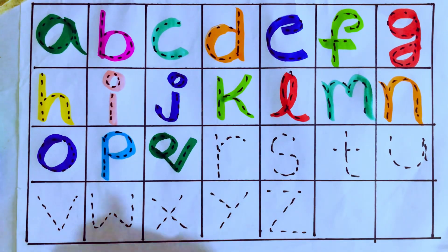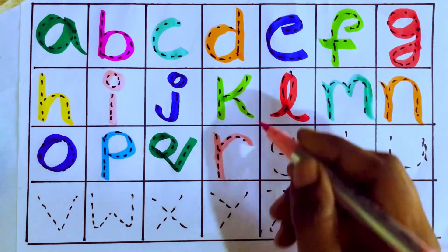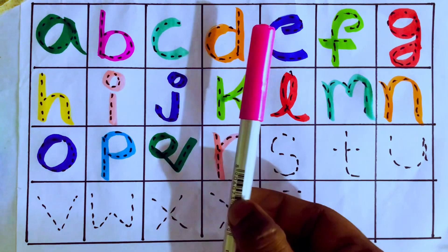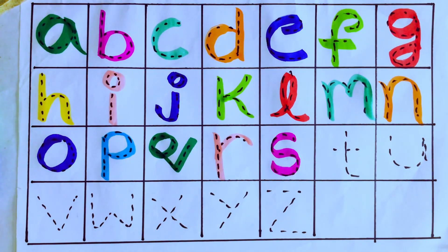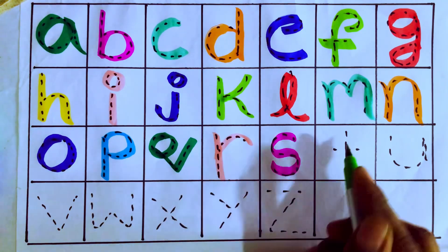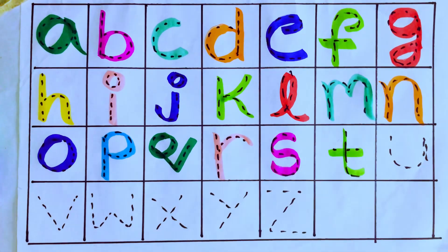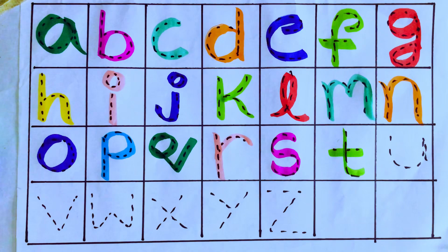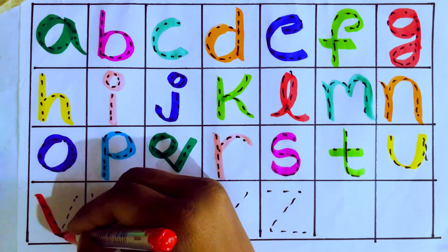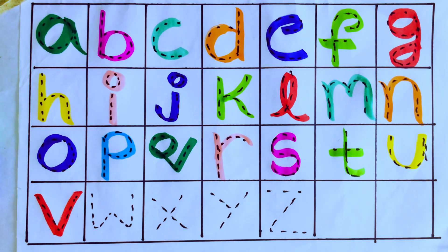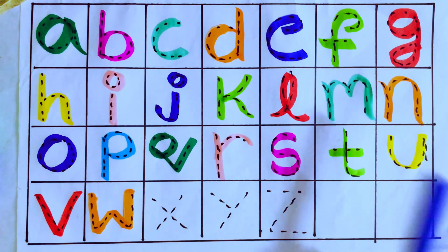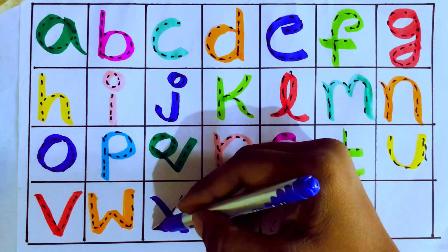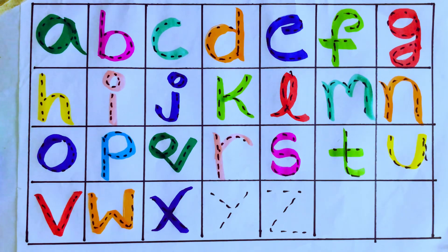Light pink color — Q after R, which letter, kids? R! R for rose — R-O-S-E, rose. Pink color — R after S. S for sunflower. Light green color — S after T, which letter, kids? T! T for table. Blue color.